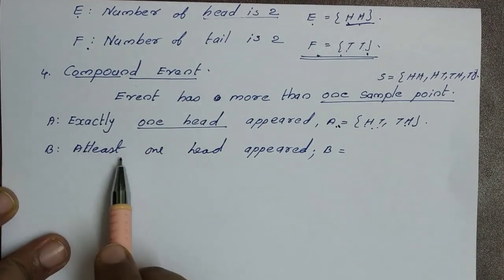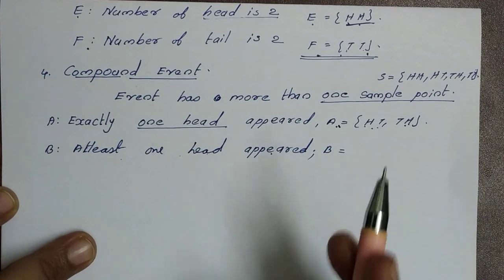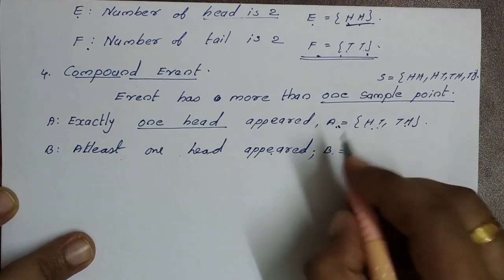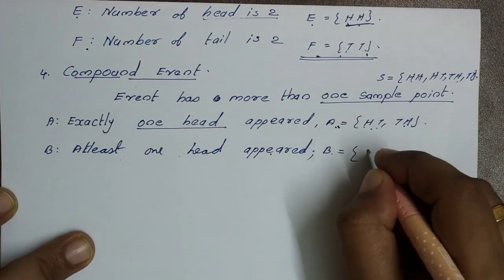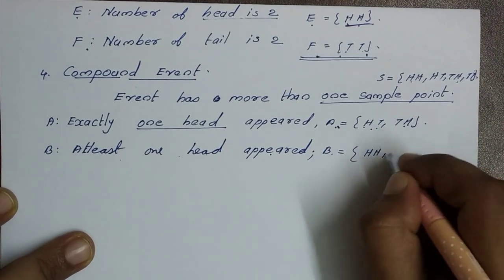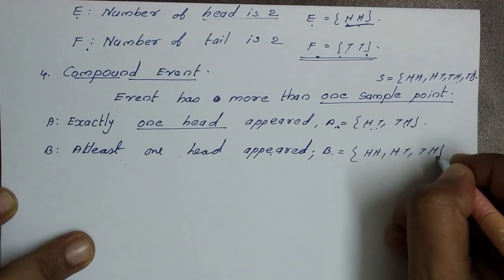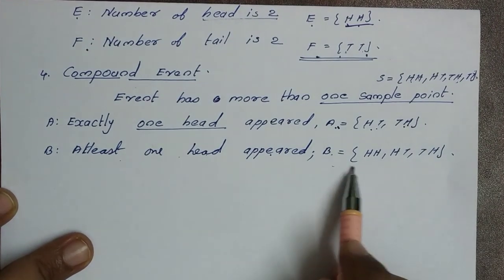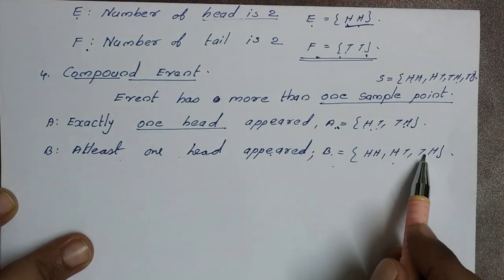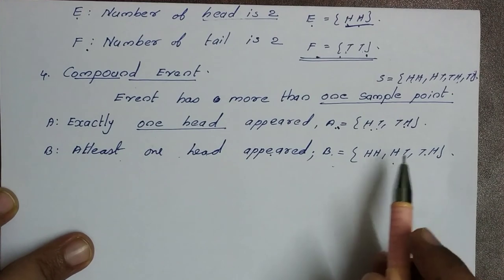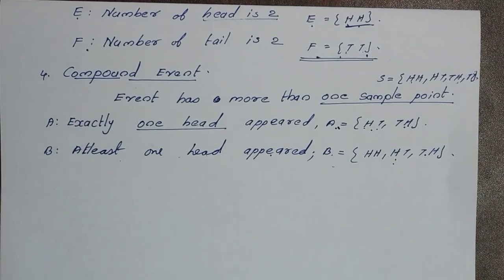If we take another event: at least one head appears — that gives us {HH, HT, TH}, which also has more than one sample point. So this type of event is also a compound event. These four types — impossible, sure, simple, and compound — are the types of events. The next topic is algebra of events.